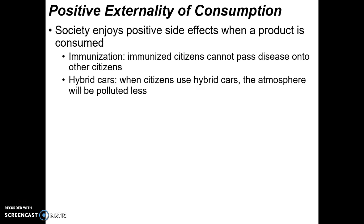One example is immunization — immunized citizens cannot pass disease to other citizens. A healthy 25-year-old might think: if I get sick, I'll just tough it out. So they skip the flu vaccine every year. What that individual doesn't consider is that if they get the flu, they can spread it to people with weaker immune systems who could suffer serious complications. Society would want that person to get immunized even more than the individual does, because society is concerned with the contagious effect.